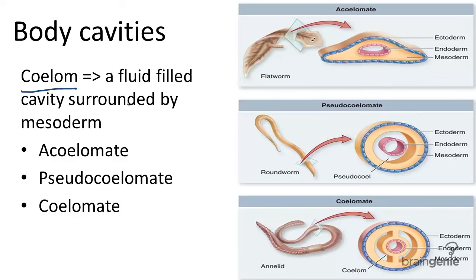Going from simple to complex, they include acoelomates, as you can see at the top, demonstrated in this cross section of a flatworm. There is no body cavity in the mesoderm, so no sort of separate body cavity. There is no coelom to help this organism develop more complex internal systems, so we'll classify this as primitive.